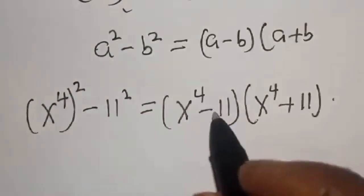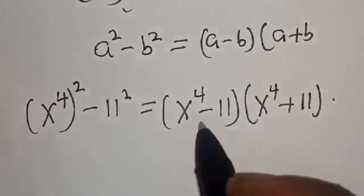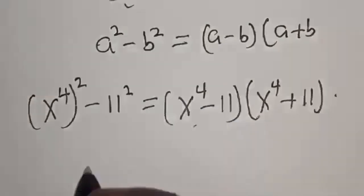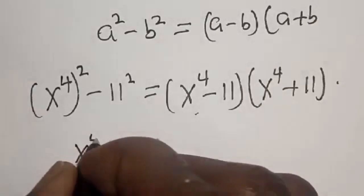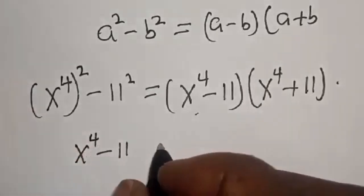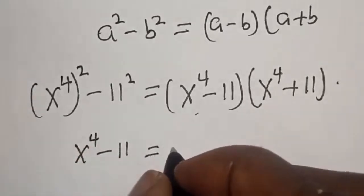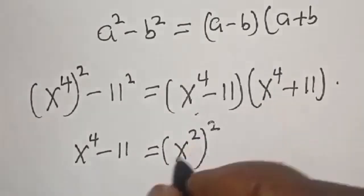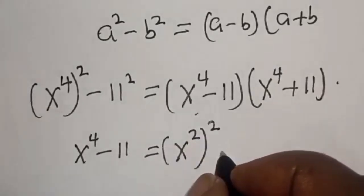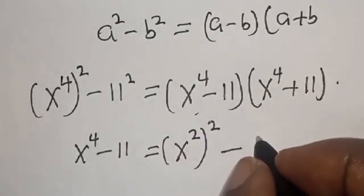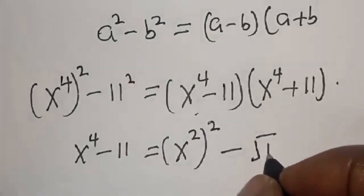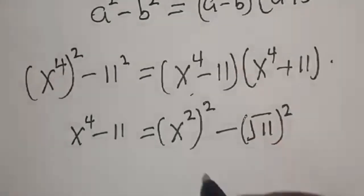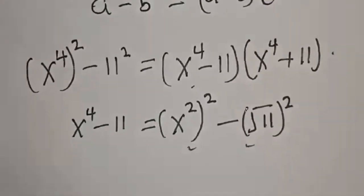This is s raised to power 4 minus 11, and this is s raised to power 4 plus 11. Now let's look at s raised to power 4 minus 11. We can write this as s squared, squared, minus the square root of 11, squared. This is also a difference of two squares.